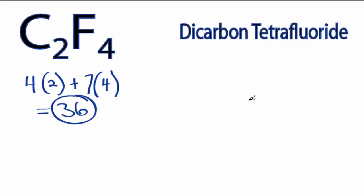Carbon is the least electronegative, so those carbons will be at the center, and then we'll put the fluorines on the outside.